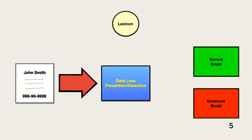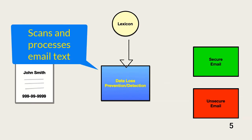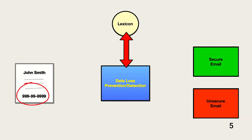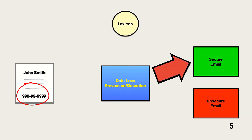Here a user is sending an email to an external entity that includes a customer name and social security number. The message is scanned by the DLP system, which compares the content to entries in its lexicon containing patterns for matching data content. In this case, it matched a social security number pattern with the SSAN in the message. The DLP tags the message as highly confidential, resulting in the message being sent via the organization's secure email system that ensures encrypted delivery.